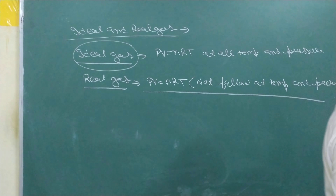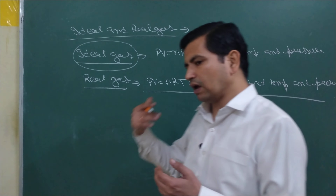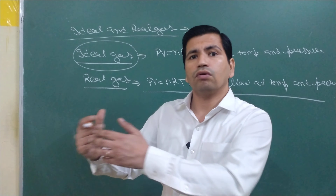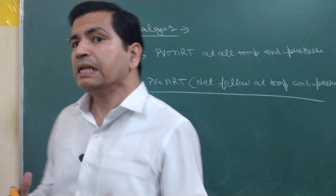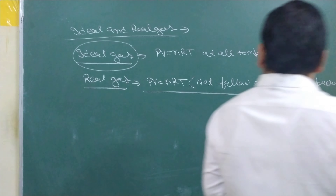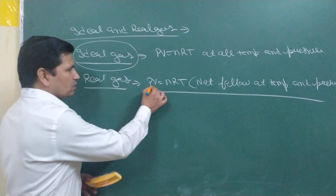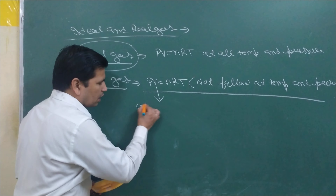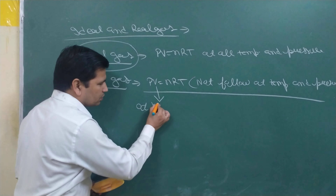So first, why does any gas not follow PV = nRT at all temperatures and pressures? Because if it did follow at all temperatures, it would become ideal. This means no gas is ideal. And the second point is: in real gas, PV = nRT is followed, but when? At high temperature and low pressure.